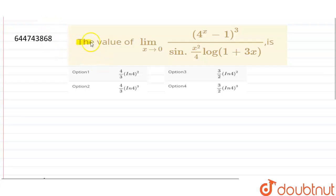Hello students, the question is the value of the limit x tends to 0, 4 to the power x minus 1 whole cube divided by sine of x square by 4 into log of 1 plus 3x. For solving this type of question,